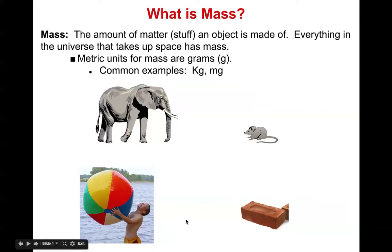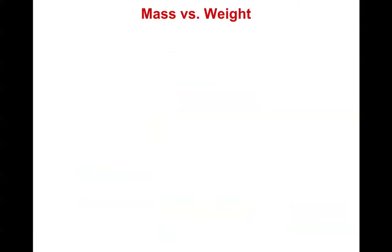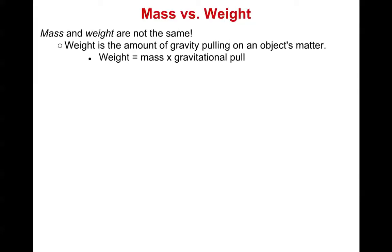Here on Earth we often use mass and weight interchangeably, but they really are not the same. Weight is the amount of gravitational pull on an object's matter. Everything in the universe has a gravitational pull — something as large as the Earth has more gravitational pull because there's more matter. The equation is simply: weight equals mass multiplied by gravitational acceleration. If you know your weight and the gravitational pull, you can calculate your mass with simple algebra.